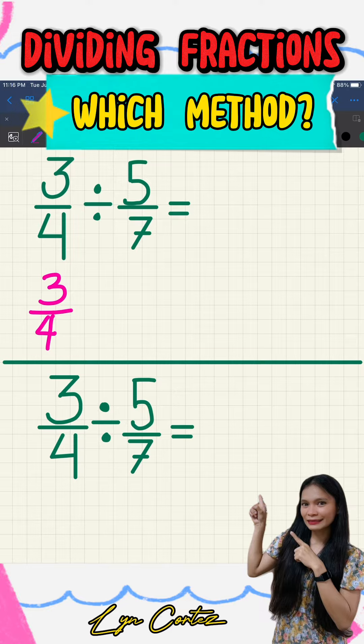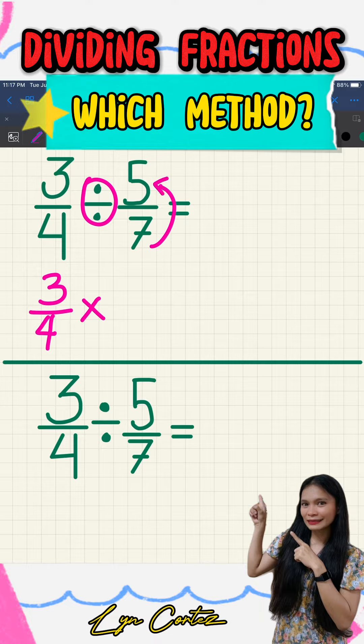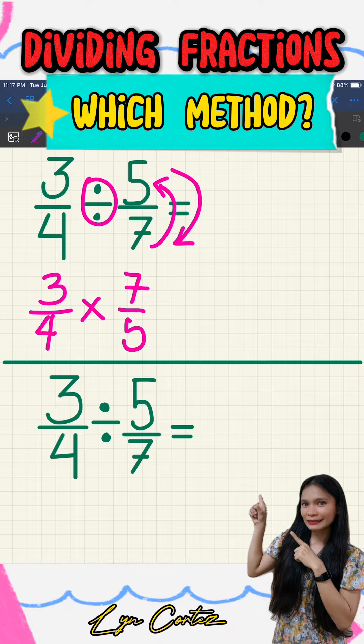First, copy 3/4, then change the division symbol to multiplication. Then for the second fraction, we have to get the reciprocal of it or switch the order of the denominator and the numerator. So instead of 5/7, we will do 7/5 or 7 over 5.